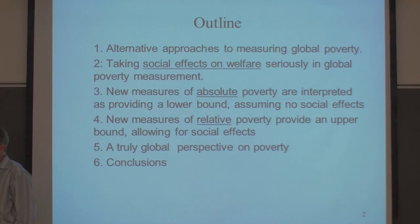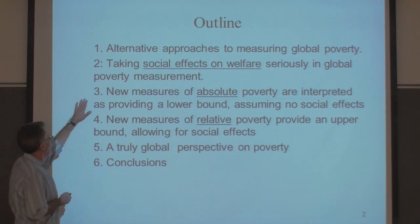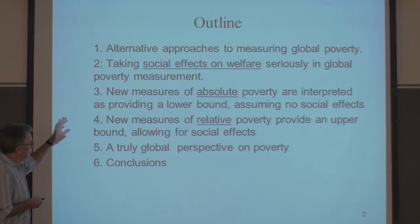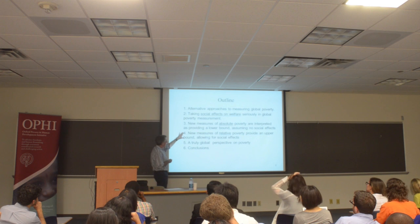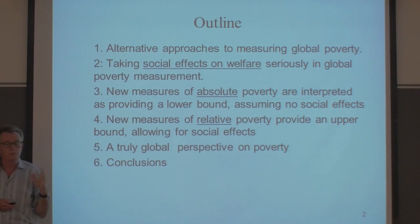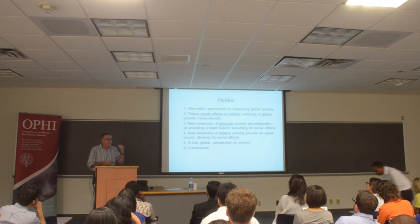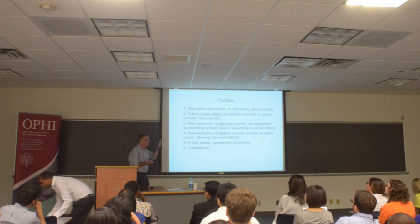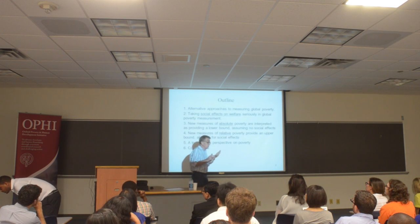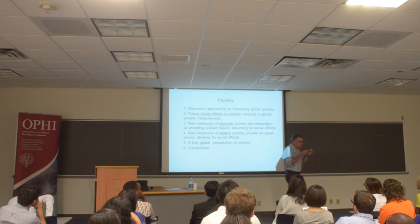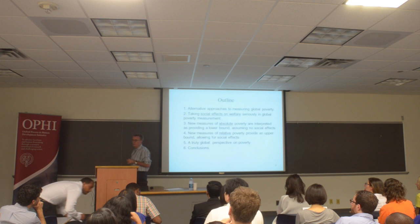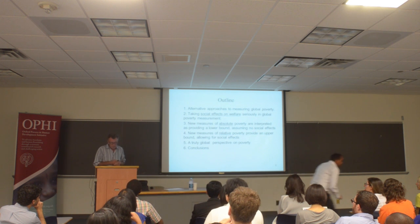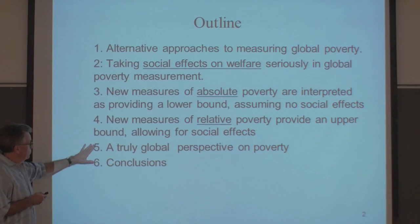I'm then going to turn to some numbers. We'll look at new measures of absolute poverty following fairly traditional methods, and then new measures of relative poverty using methods I've been proposing in recent times that have not yet become mainstream. Then I'm going to give you the first truly global perspective on poverty. We have not had a global perspective previously — we've had different countries and different worlds, a developing world and a developed world not fitting together in how they measure poverty. We're going to try and break that down and find a unifying concept.